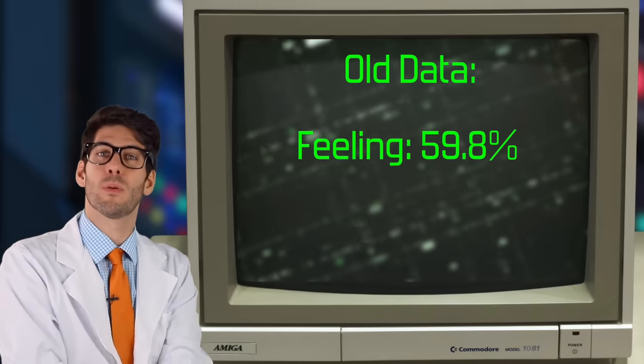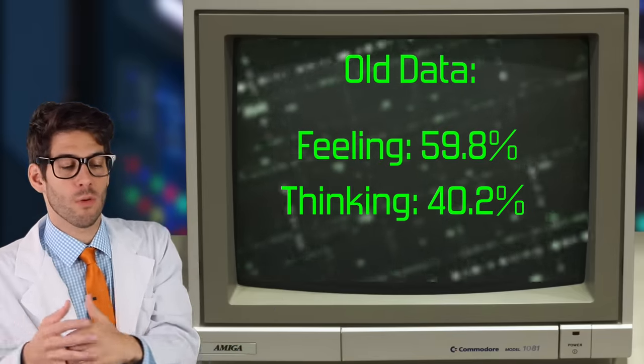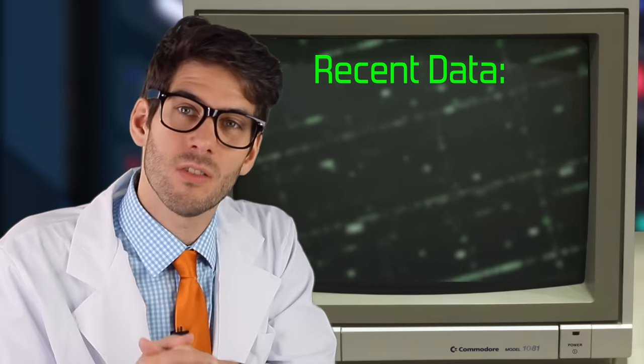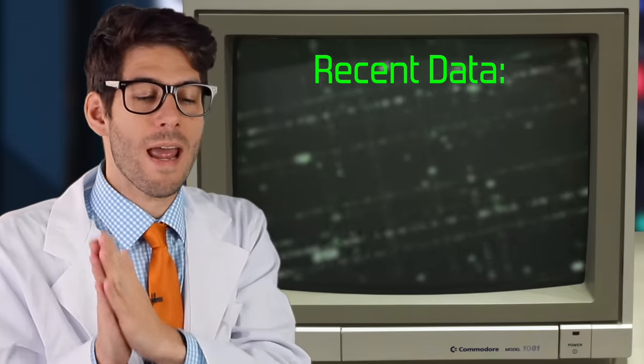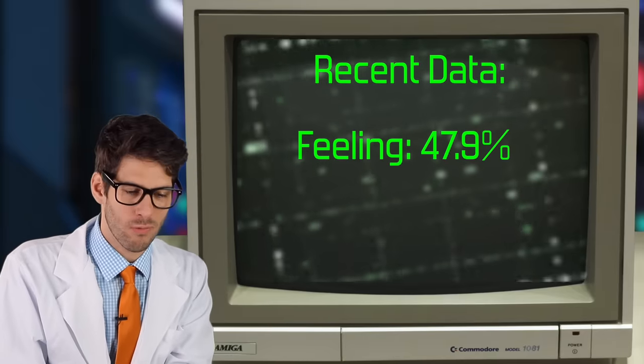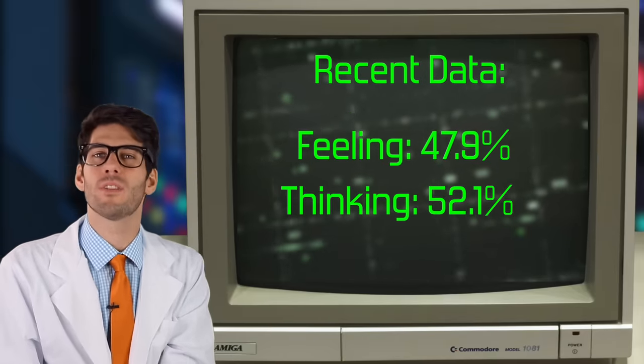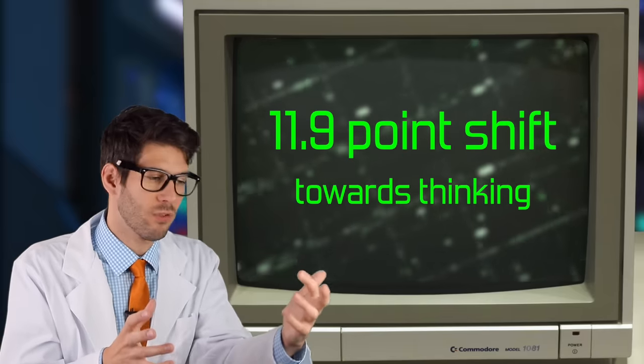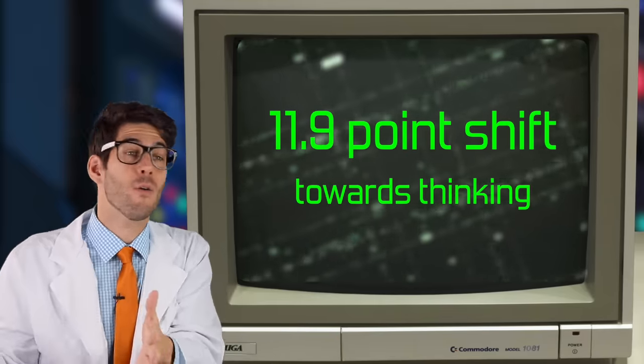Next is F or T, thinking or feeling, how we make decisions. Is it thinking, logical, or is it feeling based on values and emotions? This one is actually the biggest swing there is. Before we had 59.8% of people preferred feeling and 40.2% preferred thinking. That has swung almost 12 points to now 47.9% prefer feeling and 52.1% prefer thinking. Previously, the results indicated that most people were feelers and now it's the other way around. Most people test as thinkers, which frankly surprises me a bit, but you know, that's what the numbers tell us.